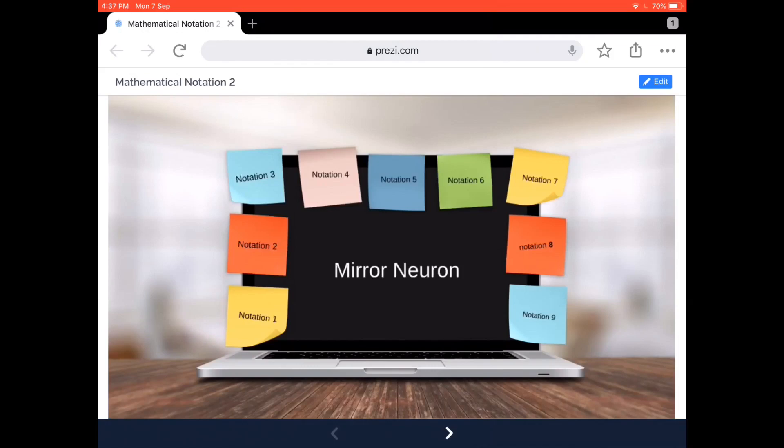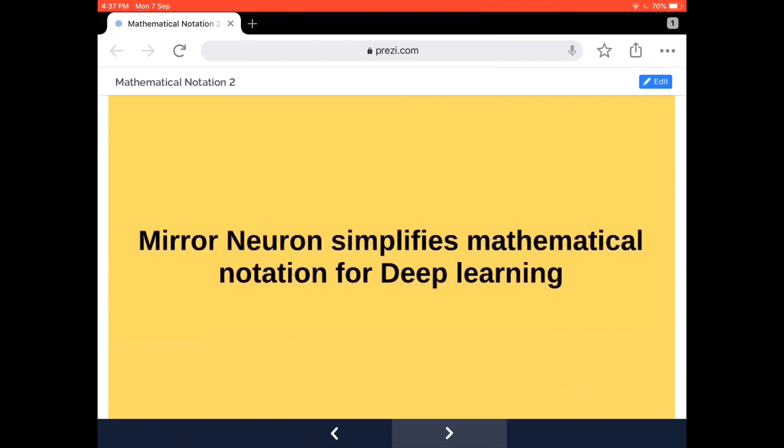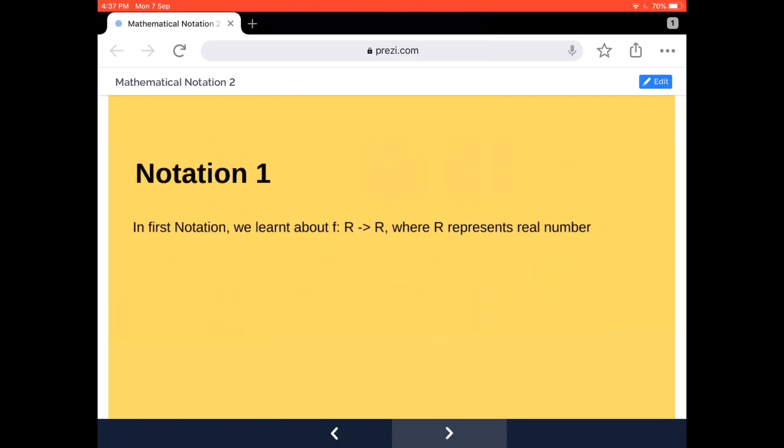Once you become familiar, I believe you will enjoy it very much and use it in your day-to-day data science journey. Today's notation is based on what we've already seen in our first video, which is a real number. The notation was a function f which takes some value which is a real number, does some operation, and gives us a real number back. That real number is represented using a Greek letter, which is ℝ.